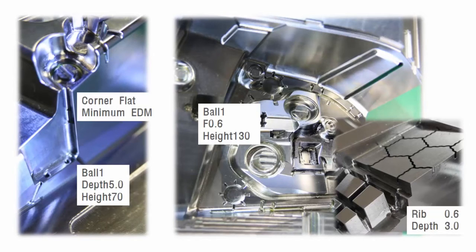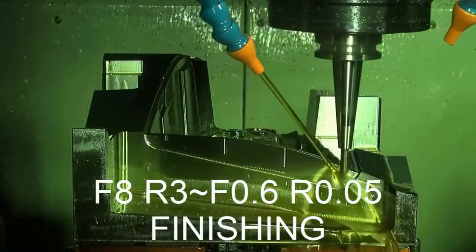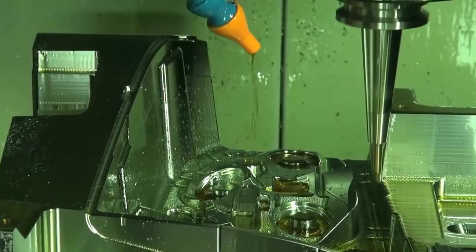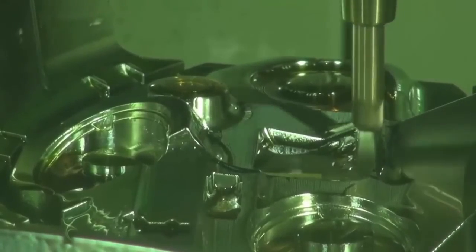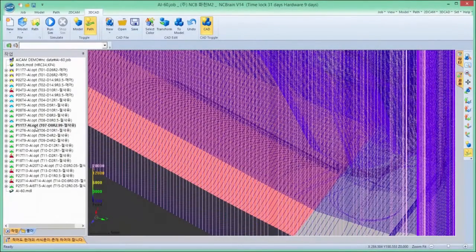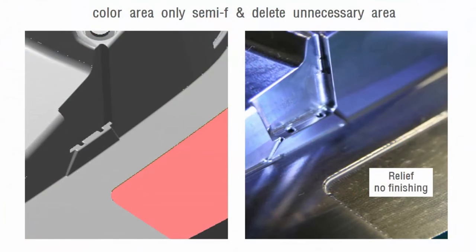For finished machining, AI CAM uses bull-nose tools — diameter 8, radius 3 with 6 blades — which guarantees 2 times faster machining and longer lifespan. During finished machining, AI CAM inserts corner radius to prevent low quality and blade damage even on small load areas. Sometimes there are unnecessary areas of relief and finishing. You can see toolpaths deleted with recognition of the colored relief area — the relief can be done only with semi-finish. The designer can intentionally omit finishing or rest finishing operations on those areas.